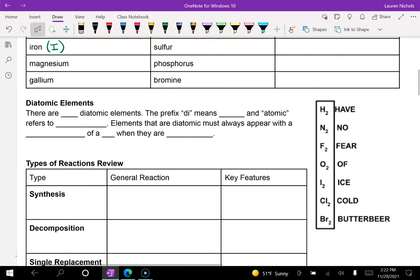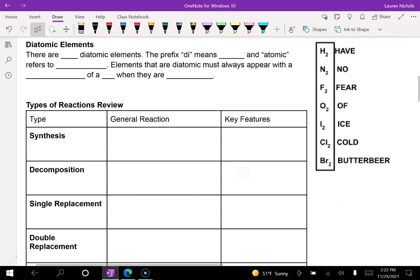Now, the other part that gets reviewed is predicting products requires us to remember what we know about diatomic elements and the types of reactions. So remember, there are seven diatomic elements. And the prefix di means two, and atomic means atoms. So it means two atoms, elements that come in pairs of two. So elements that are diatomic must always appear with a subscript of a two when they are alone.